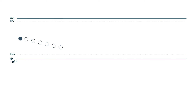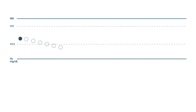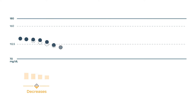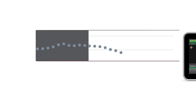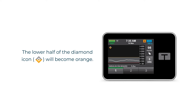When your glucose is predicted to be at or below 112.5 milligrams per deciliter 30 minutes in the future, Control IQ technology will begin to decrease insulin delivery from your active personal profile rate to help keep your glucose within the target range. When this is happening, the lower half of the diamond icon will become orange and the pump status icon will also be orange.